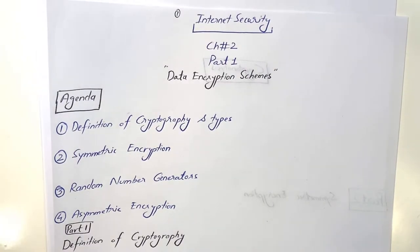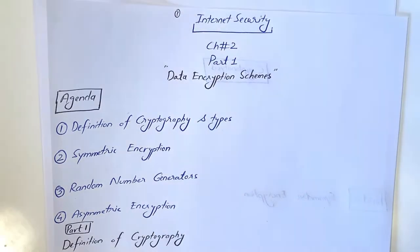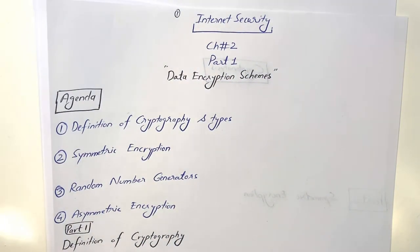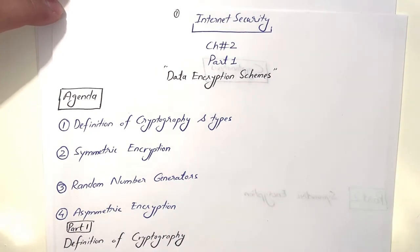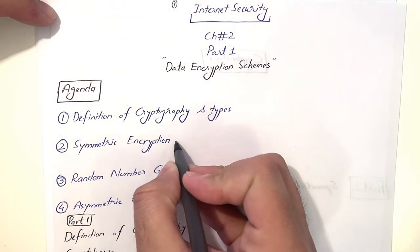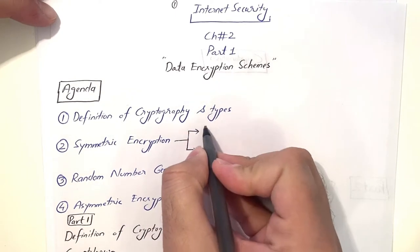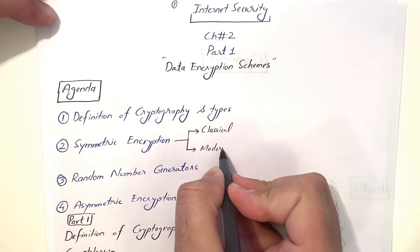Hello everyone. Today we will discuss chapter two of the Internet Security course. The chapter is about data encryption schemes, specifically classical techniques of symmetric encryption algorithms. We will also discuss random number generators and asymmetric encryption. In this video, we will cover classical techniques and then some modern encryption techniques.